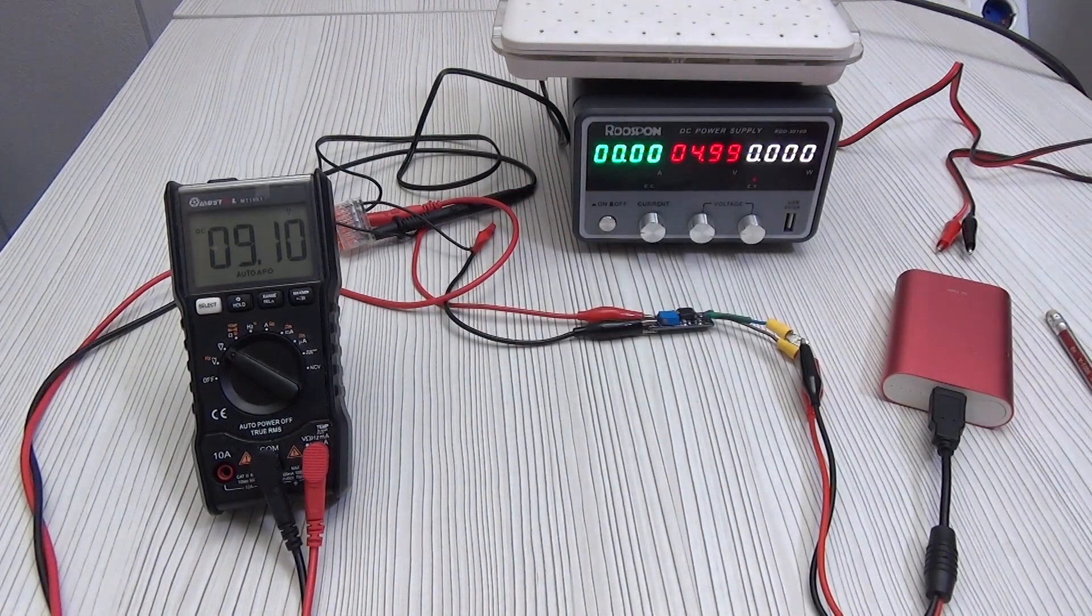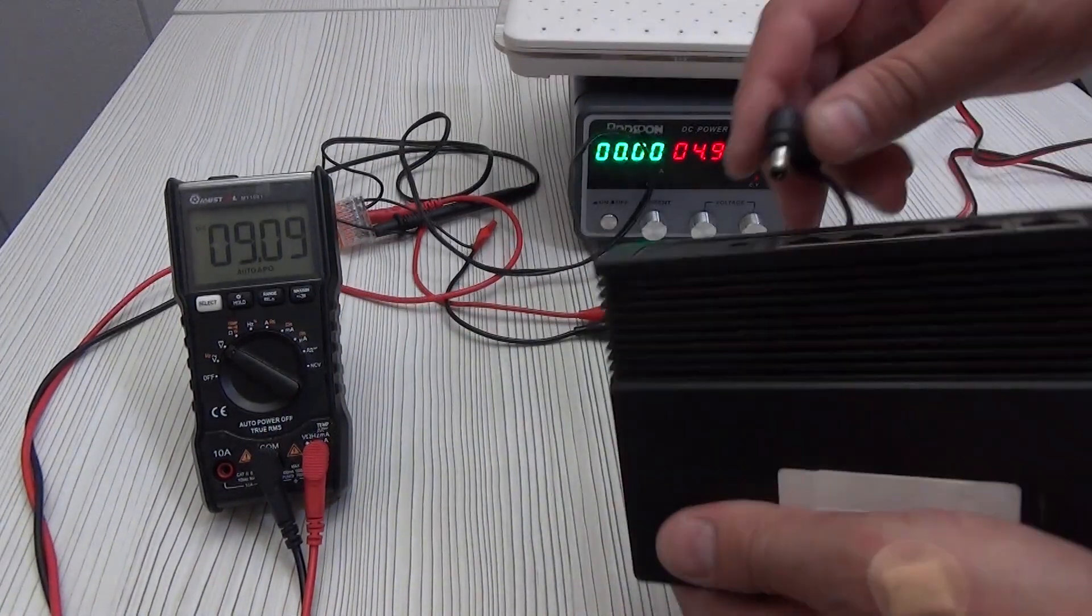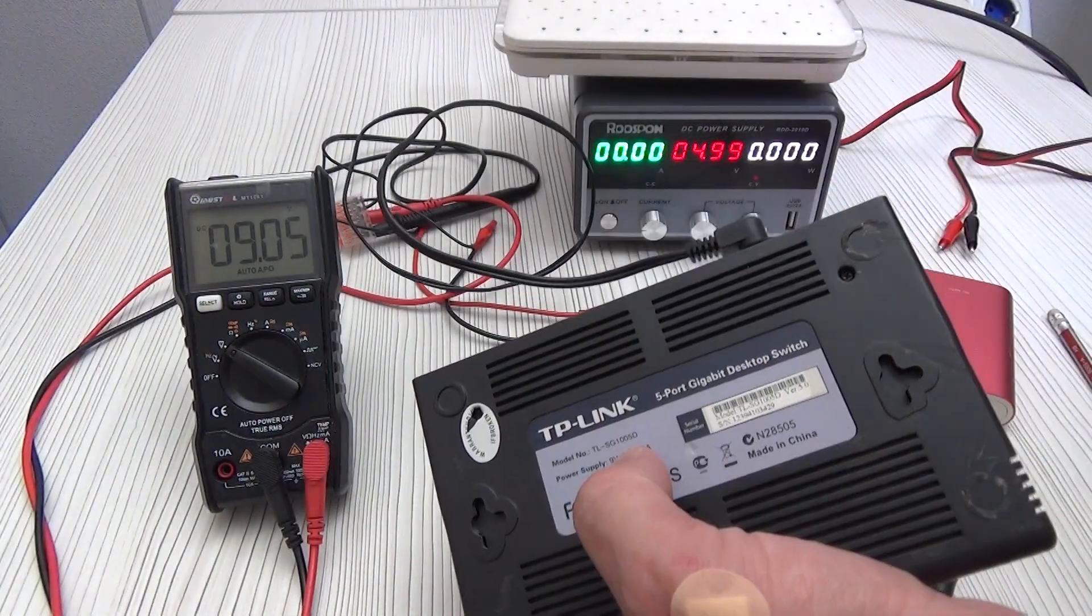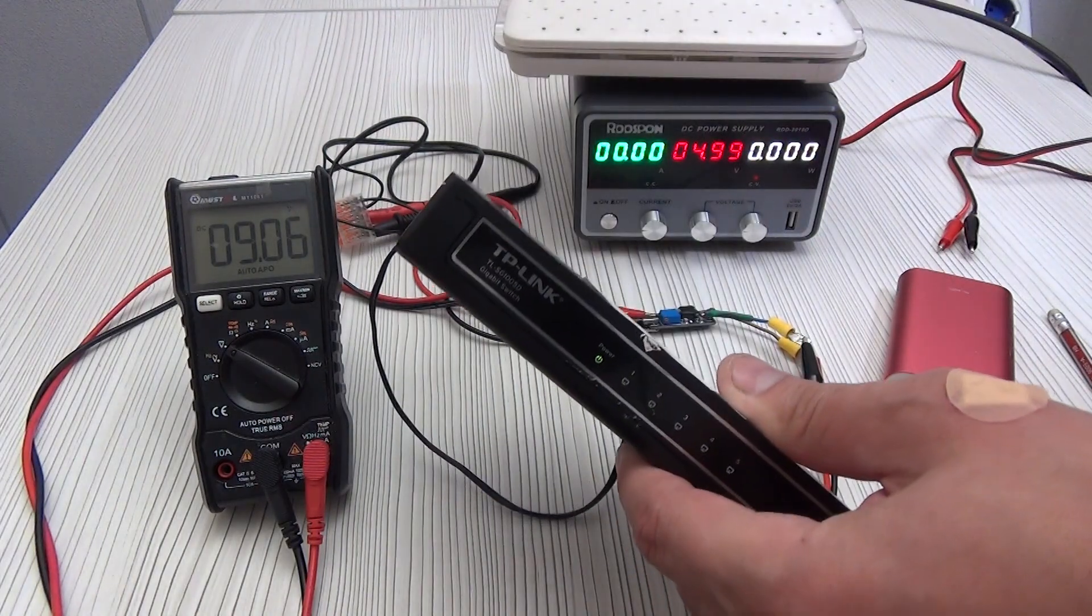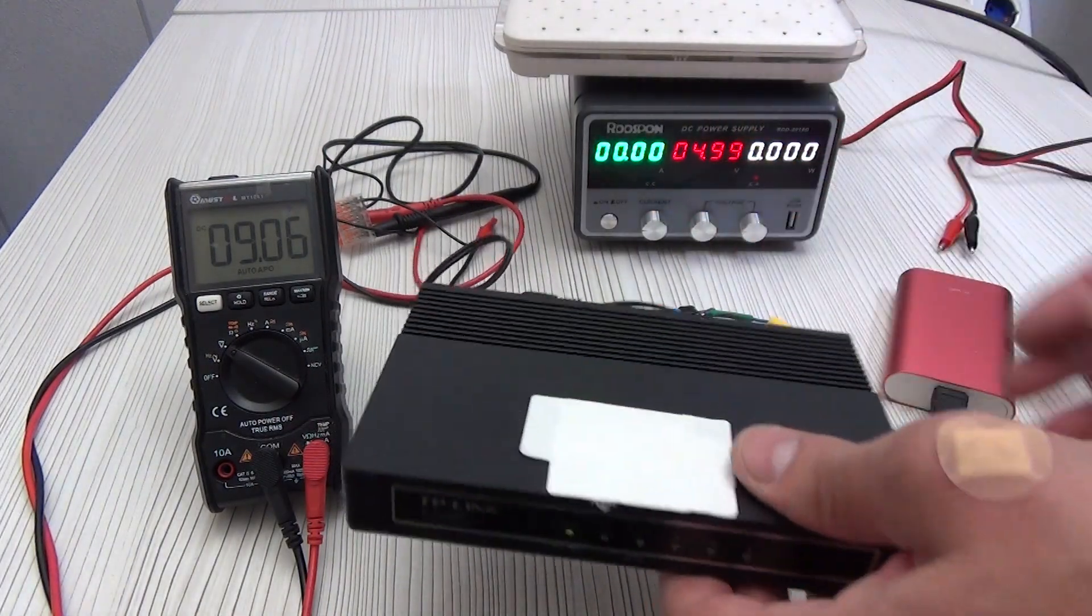Here, at the output, we can set 9 volts. For example, we connect a local network switch. In this case, we can immediately put the power bank on charge, and if the electricity goes out, the switch will continue to work.